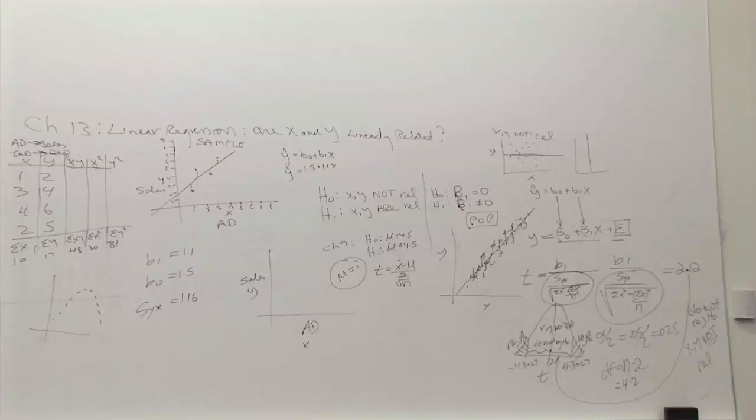So, for homework, of course, apply this formula to those three or four examples where they ask you the question are X and Y related, including the spinner project. And, please do this for next time. This is a major part of the chapter.